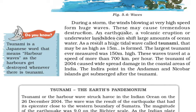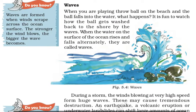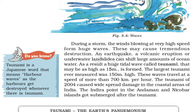During a storm, the wind blows at very high speed forming huge waves, which may cause tremendous destruction. An earthquake, a volcanic eruption or underwater landslides can shift large amounts of ocean water. As a result, huge tidal waves called tsunamis are formed. The largest tsunami ever measured was 150 metres high, and these waves travel at a speed of more than 700 km per hour.